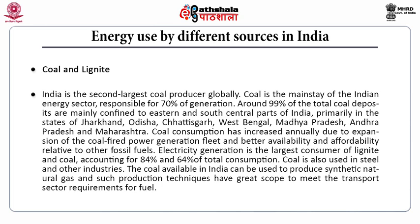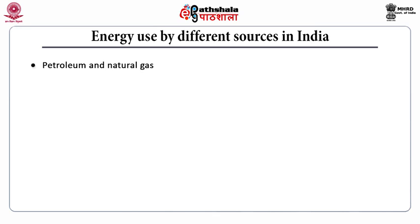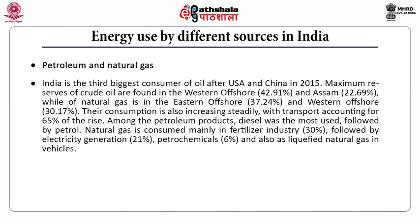Petroleum and natural gas: India is the third biggest consumer of oil after the USA and China. The maximum reserves of crude oil are found in the western offshore at around 42.91% and in Assam at around 22.69%, while natural gas is in the eastern offshore at about 37.24% and western offshore at 30%. Their consumption is also increasing steadily, with transport accounting for 65% of the rise. Among petroleum products, diesel is the most used followed by petrol. Natural gas is consumed mainly in the fertilizer industry at 30%, followed by electricity generation at around 21% and 6% in petrochemical industries.